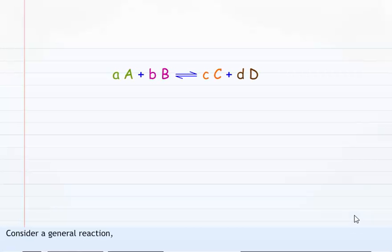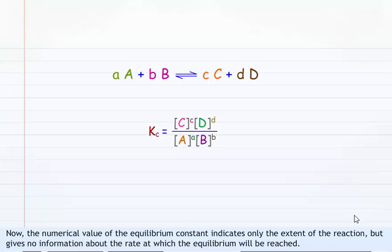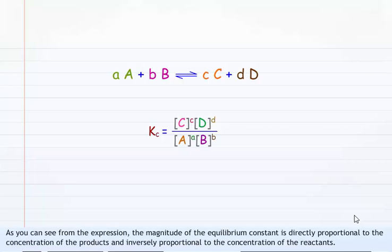Now let us see what the applications of equilibrium constant are. Consider a general reaction: aA plus bB reversibly giving cC plus dD. The equilibrium constant will be given by KC equals concentration of C raised to c, into concentration of D raised to d, divided by concentration of A raised to a, into concentration of B raised to b. The numerical value of the equilibrium constant indicates only the extent of the reaction, but gives no information about the rate at which the equilibrium will be reached. The magnitude of KC is directly proportional to the concentration of the products and inversely proportional to the concentration of the reactants.